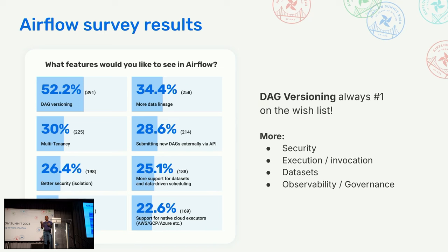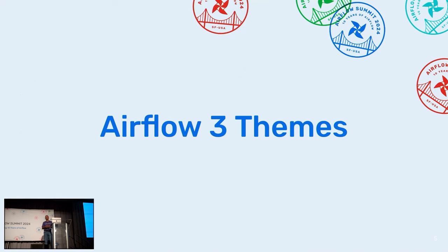As we started thinking about Airflow 3 and where to take Airflow next, the first place we looked was the Airflow Survey. We as a community send out the Airflow Survey every year — please do take the time to respond. We take the feedback very seriously. The initial feedback wasn't very surprising: DAG versioning was number one on the wish list and has been for three years running. There were also more requests for security options and guardrails. But clearly surveys don't tell the entire picture, so we had lots of conversations with people using Airflow today and people not yet using it, and that led us to the core themes for Airflow 3.